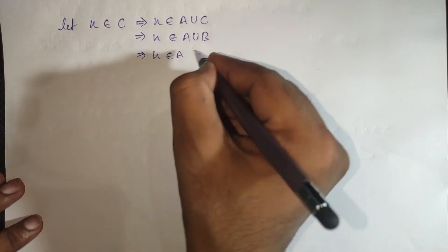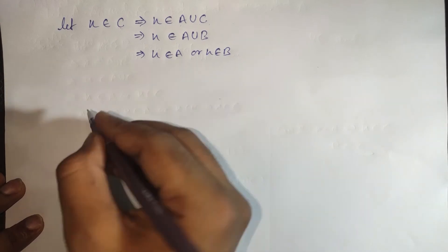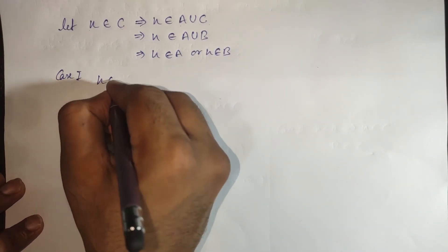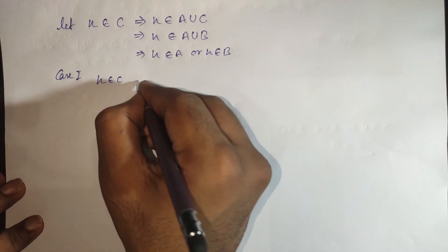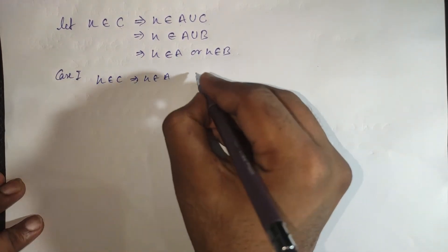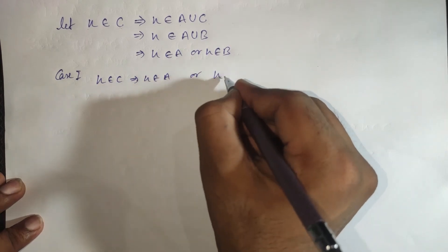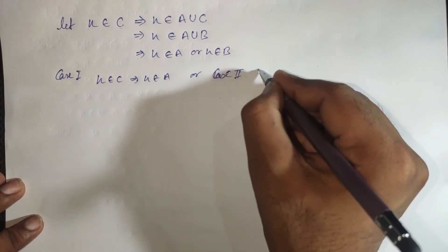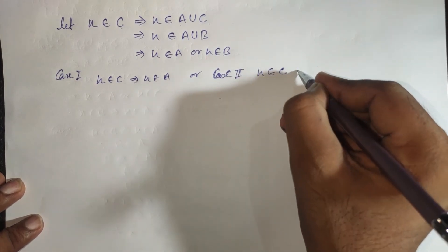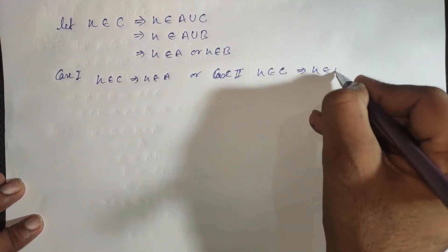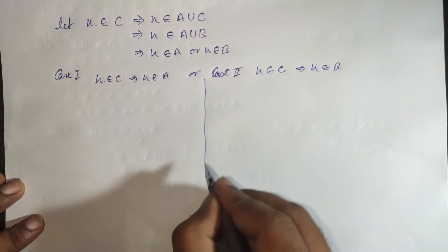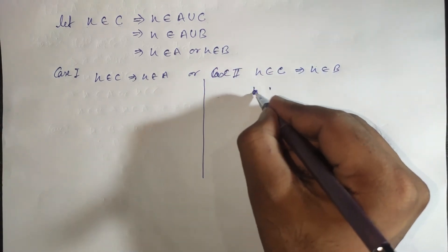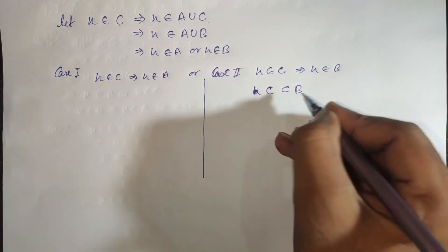So X belongs to A union B, meaning X belongs to A or X belongs to B. This gives us two sub-cases again. Case 1: X belongs to C implies X belongs to A. Case 2: X belongs to C implies X belongs to B. From Case 2 we directly get C is a subset of B, but we still need to resolve Case 1.